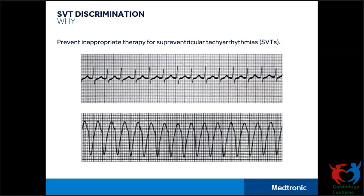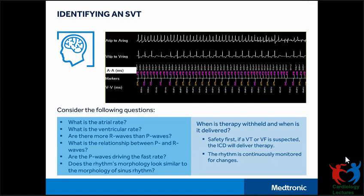On the screen there are two rhythms: on the top is a sinus tachycardia with a narrow QRS, and the bottom rhythm represents a VT with a broad QRS. The whole objective of SVT discriminators is to prevent inappropriate therapies for SVT. We generally apply the logic of rate, then look at the R waves and P waves, and also look at the relationship between P and R to decide whether this is a VT or an SVT. Similarly, the ICD also applies the digital characteristics of the EGM to identify an SVT.